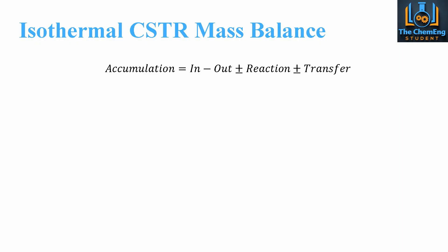If we consider the isothermal CSTR mass balance first, we'll use the general mass balance: accumulation equals what comes in minus out, plus or minus the reaction, plus or minus transfer. It's important to remember what isothermal means — isothermal simply means that we do not have a change in temperature within our given system, so we operate at a constant temperature. If we have isothermal conditions then we don't require an energy balance.